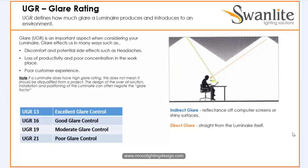UGR 19 is a moderate glare control rating, very good for office use, and again it's typically direct-indirect or diffused. The problem with diffused fittings is they lessen the lumen output. However, there are some fittings that can achieve UGR 19 even without being diffused — it's just a matter of technology. I'll show you something like that later.